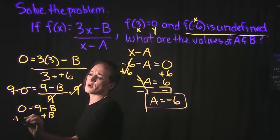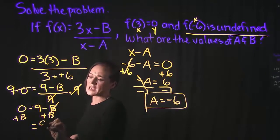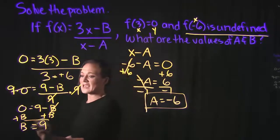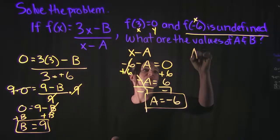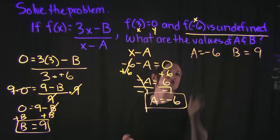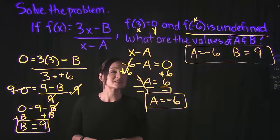And since we're solving for b, let's go ahead and just add b to both sides. It'll cancel it on the right-hand side, giving us that b is equal to 9. So now we know that a is equal to negative 6, b is equal to a positive 9, and that wraps up the problem for us. That's it for this video.